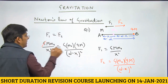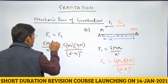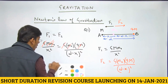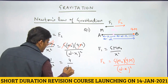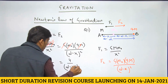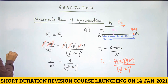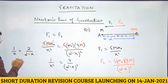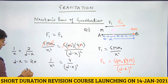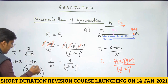Since we want M0 to experience no net force, we set F1 = F2 because they are opposite in direction. This gives G·M0/x² = G·M0·4M/(D − x)². Cancelling G, M0, and M, we get 1/x² = 4/(D − x)². Taking the square root: 1/x = 2/(D − x), so D − x = 2x, giving x = D/3.